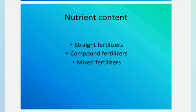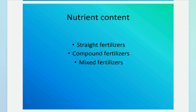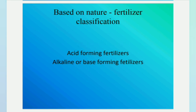Based on nutrient content, fertilizers are classified as straight fertilizers, compound or complex fertilizers, and mixed fertilizers. A straight fertilizer contains only one primary nutrient — for example, urea contains only nitrogen. A compound or complex fertilizer is a chemically combined form containing two or more primary nutrients. A mixed fertilizer is a physical mixing of two or more straight fertilizers.